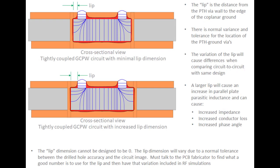Here is another example of Grounded Coplanar Waveguide, looking at what I call the lip dimension — in the coplanar top copper layer, this is the distance from the ground plane to the edge of the plated-through hole drilled to connect the top and bottom grounds. That dimension, nominally maybe 10 mils, can vary plus or minus 5 mils or more depending on the circuit fabricator. Talk to your fabricator to understand what that variation means and incorporate it into your RF simulations.